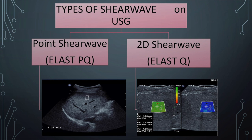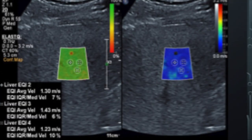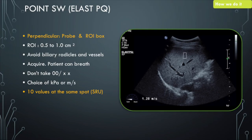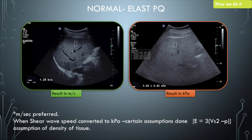There are two types of shear waves available on ultrasound machines. Point shear wave has been available for some time. In this technique, you get a small box roughly 0.5 to 1 centimeter square, placed 2 centimeters below the capsule, absolutely perpendicular to the transducer and to the capsule of the liver. We must ensure the box is not placed within vessels or large biliary radicals. The patient does a shallow breath hold and we acquire readings. The guidelines state we should take 10 readings at the same spot, which is adequate for interpretation. The reading is given in meters per second, and you can also configure the machine to give readings in kilopascals — both are correct.